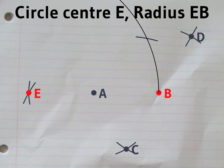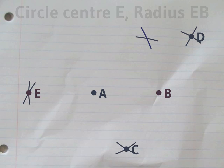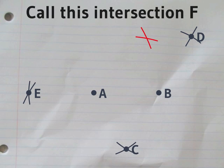Now, we need a circle centered on E with radius EB. This intersection between those two big circles, let's call F.